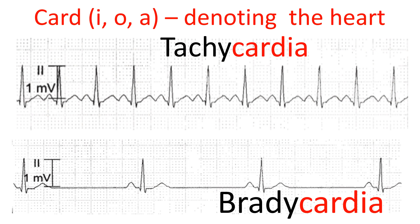Here we see the suffix "-cardia" on the end of a word, so we know it's to do with the heart. "Tachy" (T-A-C-H-Y) means fast; "brady" (B-R-A-D-Y) means slow. So a tachycardia is a fast heart rate, and a bradycardia is a slow heart rate. Typically, a tachycardia is anything above 100 beats per minute, and a bradycardia is anything below 60 beats per minute.